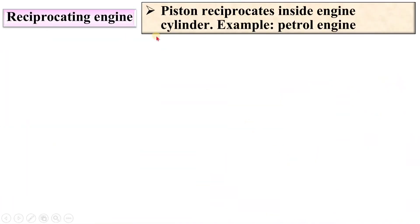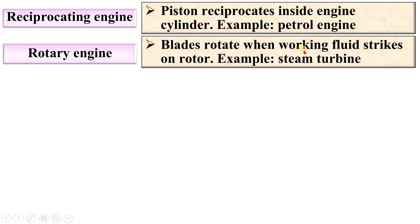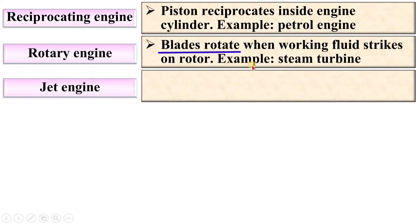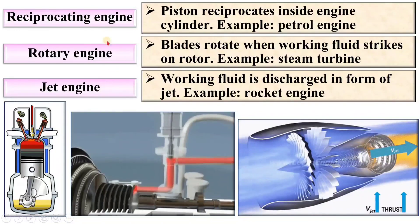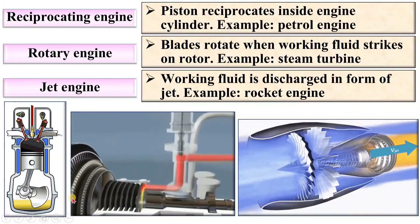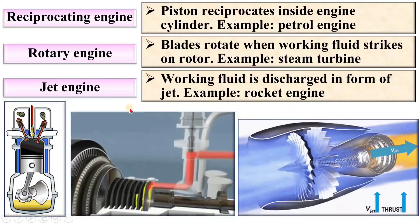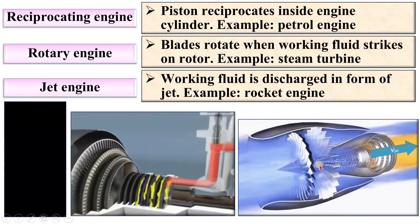Next, reciprocating engine — the piston reciprocates inside the engine cylinder. If the piston reciprocates, it is called a reciprocating engine; example: petrol engine. In a rotary engine, blades rotate when the working fluid strikes on the rotor; example: steam turbine. In a jet engine, the working fluid is discharged in the form of a jet; example: rocket engine. Here you can see three different types of heat engines: reciprocating where piston reciprocates, rotary engine where blades rotate, and jet engine where working fluid is discharged in the form of a jet.